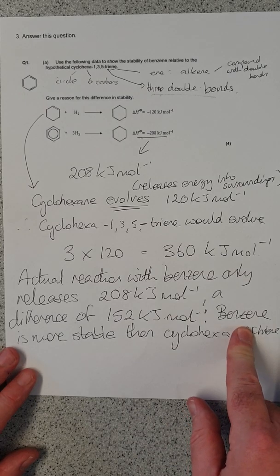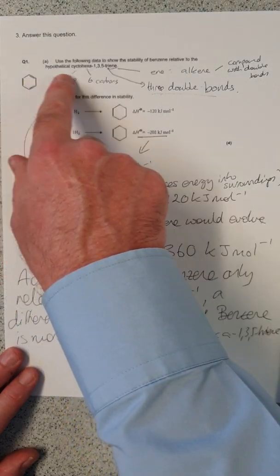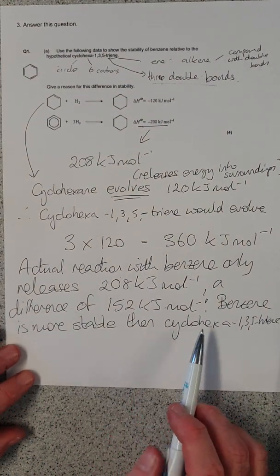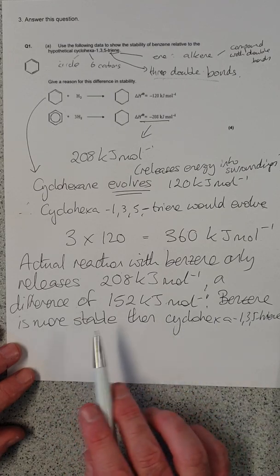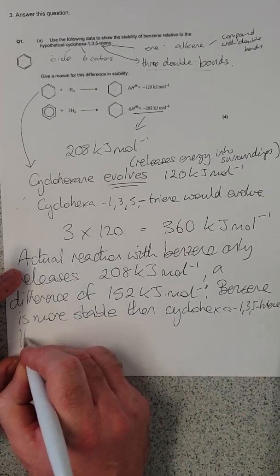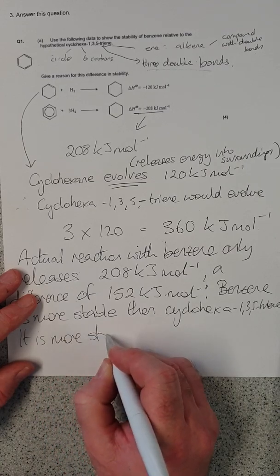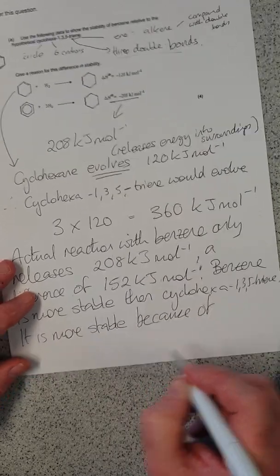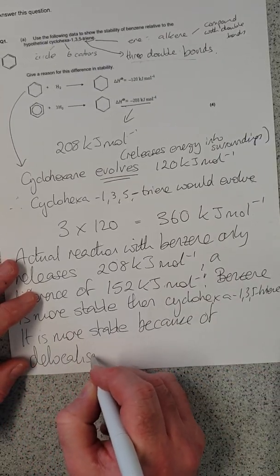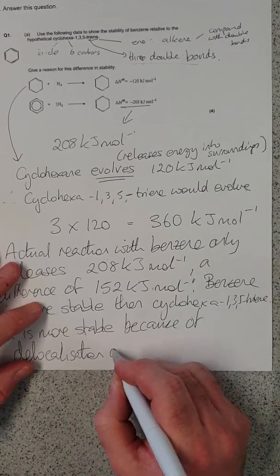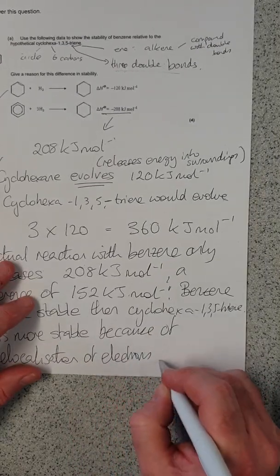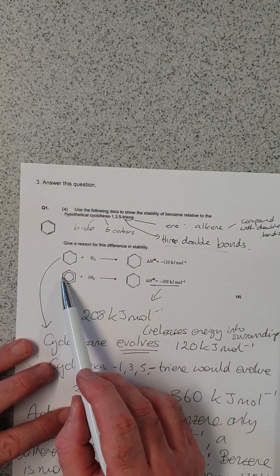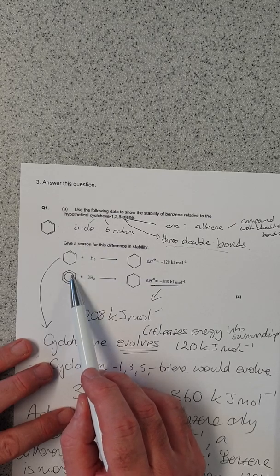We see that the benzene gives out less heat than we were expecting. So benzene must be more stable, that is, reacts less than this one, which is the cyclohexa-135-triene. So benzene must be more stable. Why is it more stable? It is more stable because of the delocalization of electrons. Rather than having the three double bonds, we have this delocalization of electrons in the benzene that makes it more stable.